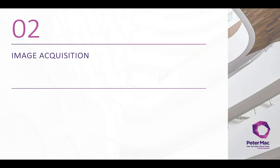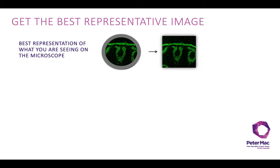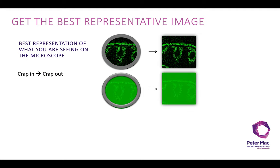The next thing is image acquisition. When sitting at a microscope, you want to get the best representation of what you can see down the eyepiece and get an image that represents that. If you can't see very much down the eyepiece, your image quality shouldn't be very good either — crap in, crap out. 90% of the battle in microscopy is sample prep. If you get your sample nice and bright, then the imaging should be very, very easy.